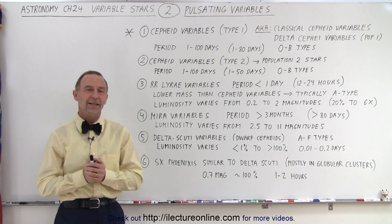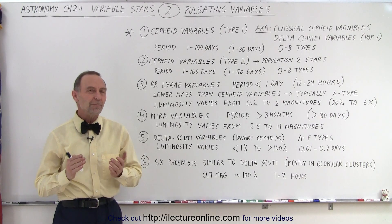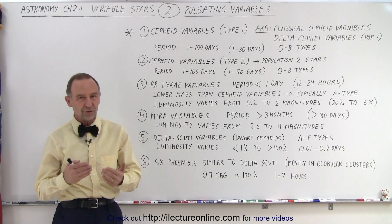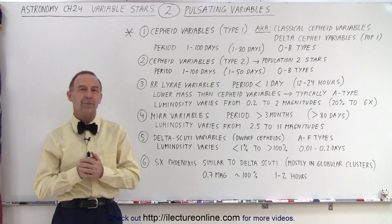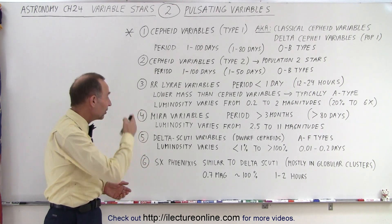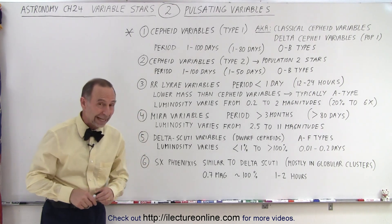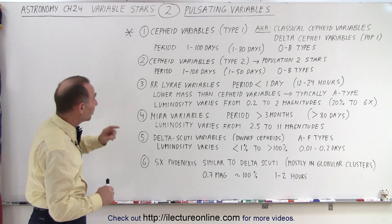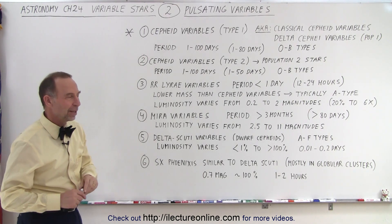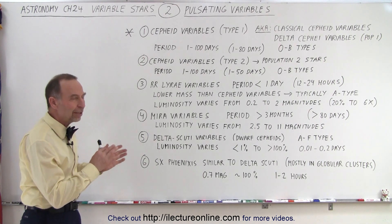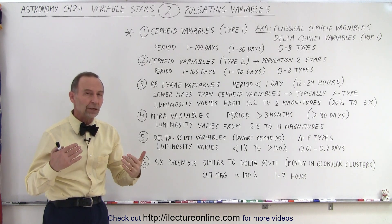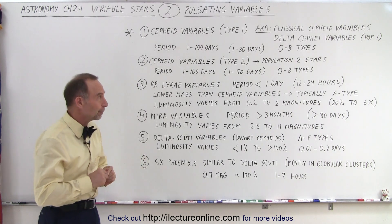Welcome to ElectronLine. The most important variable stars are the pulsating variables, and in particular the ones listed here on the board — especially the Cepheid variables at the top. But all of these types of variables do play a role in our understanding of the universe.